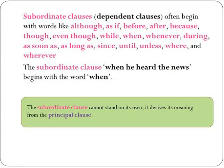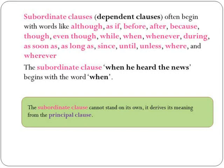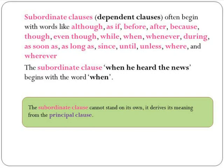Subordinate clauses, or dependent clauses, often begin with words like: although, as if, before, after, because, though, even though, while, when, whenever, during, as soon as, as long as, since, until, unless, where, and wherever. The subordinate clause "when he heard the news" begins with the word "when." The subordinate clause cannot stand on its own — it derives its meaning from the principal clause.